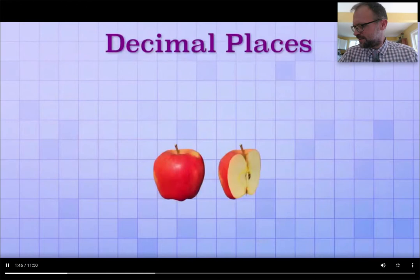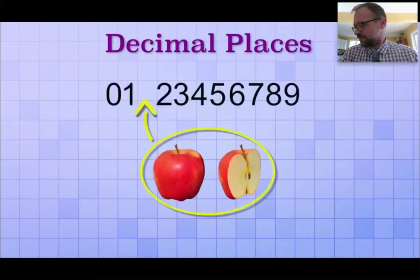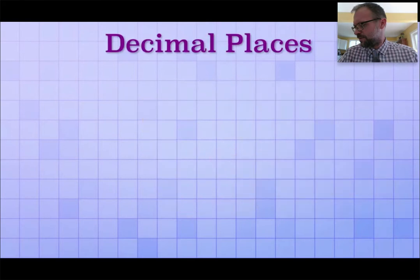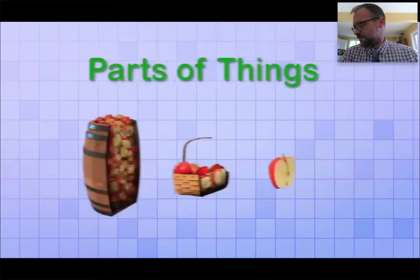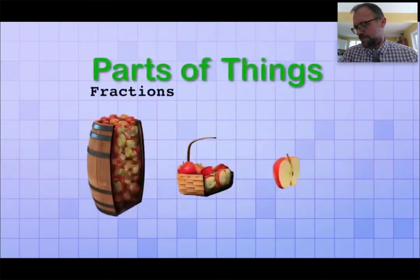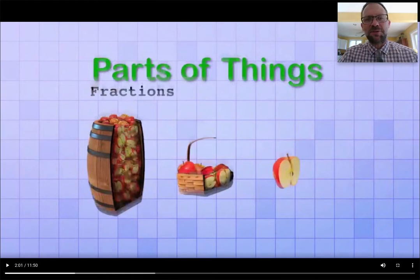Decimal places are a way of extending the base ten number system so that it can represent amounts that are in between whole amounts. Decimal places are just like regular number places, except that instead of using them to count groups, we use them to count parts or fractions of things. Oh, of course. Decimals count fractions. Well, that makes sense. Let's keep watching.